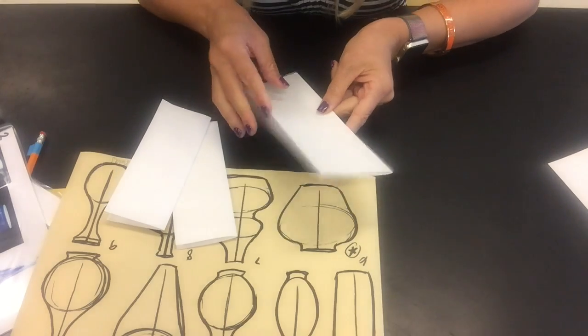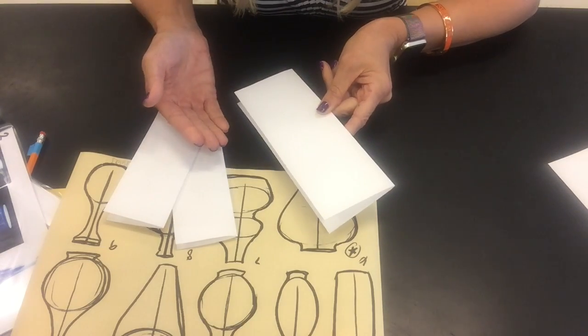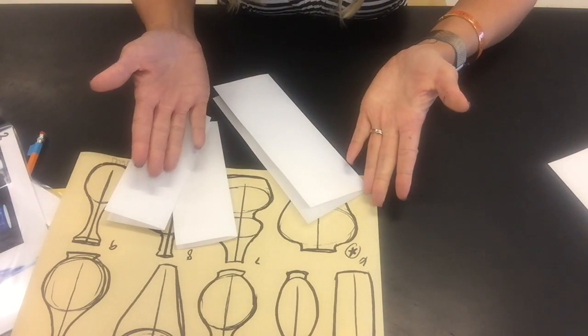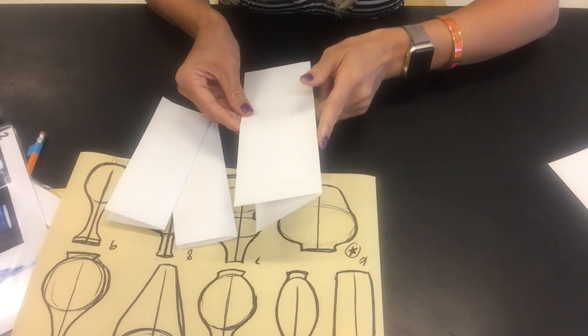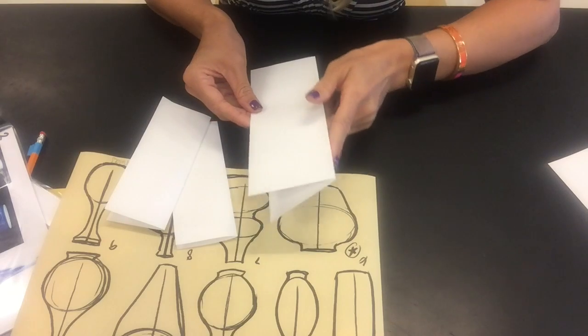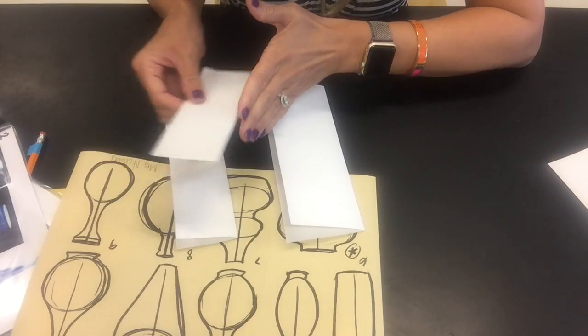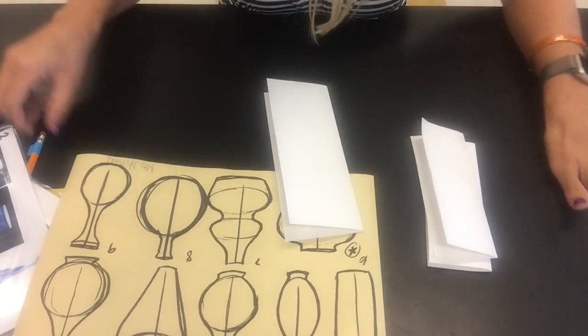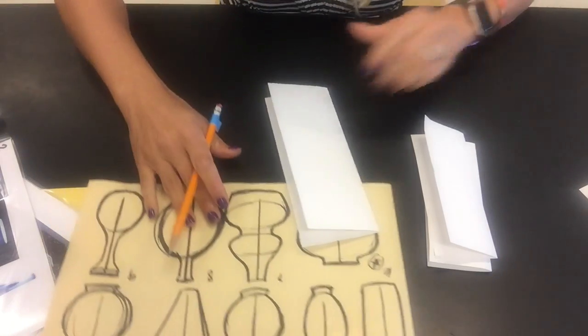So I'm going to locate my fold here on all of them. Make sure that the center of my vase drawing is going to go onto there. For this cool way of doing this, you only have to draw half of the vase.